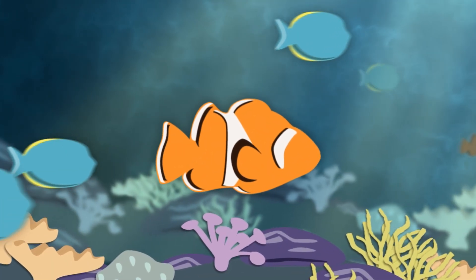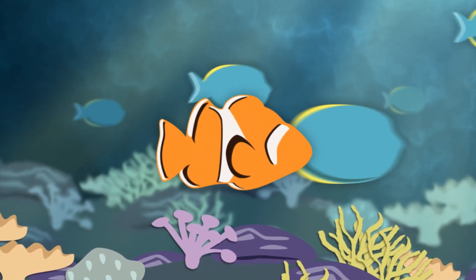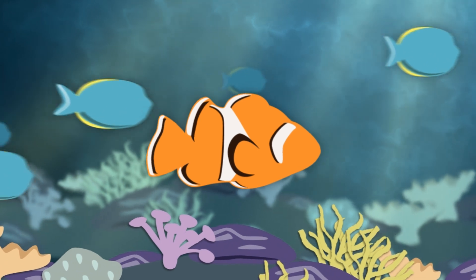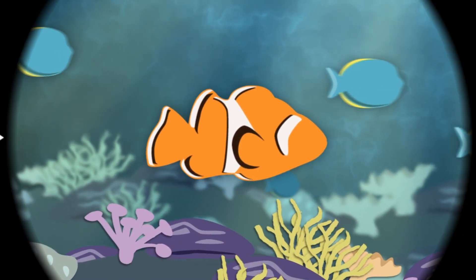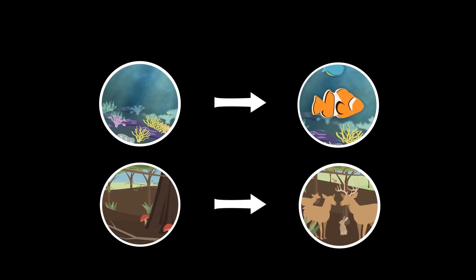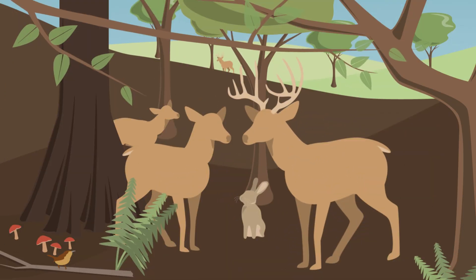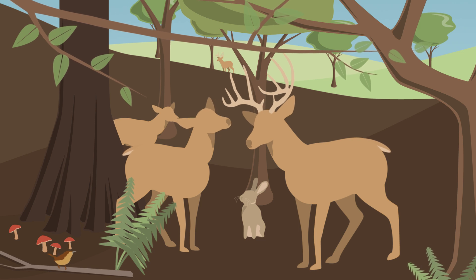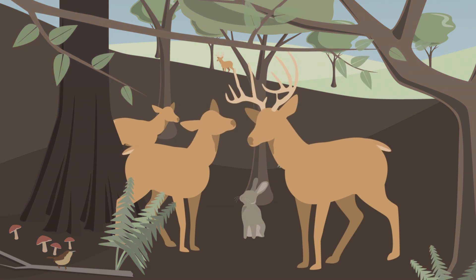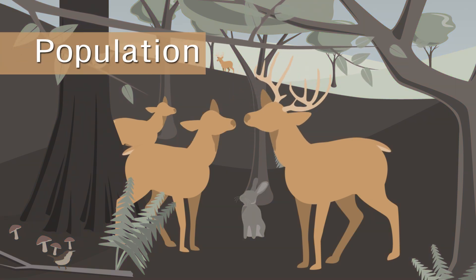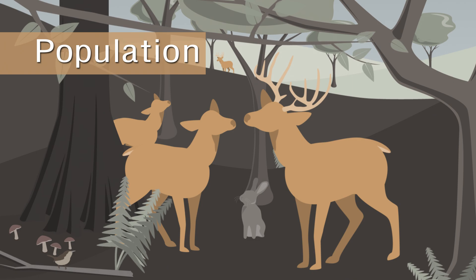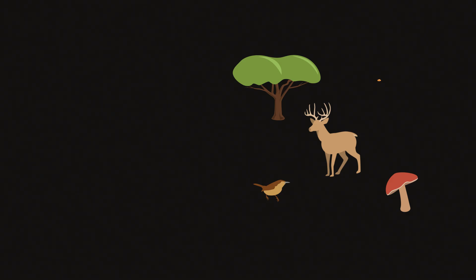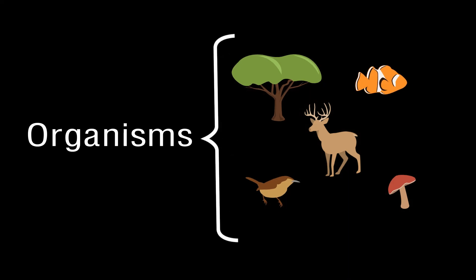Within a community, we can observe the population. A population consists of all the individuals of a species living within the bounds of a specified region. What example of a population can we see in the Indiana forest? One example is a population of white-tailed deer.